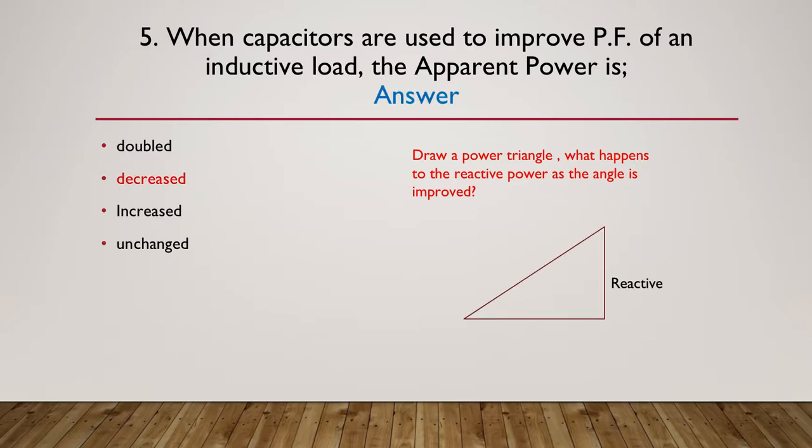The answer is decreased. When capacitors are used to improve the power factor of an inductive load, the apparent power is decreased — it's all about the hypotenuse getting smaller and smaller as the angle gets closer and closer to the horizontal.